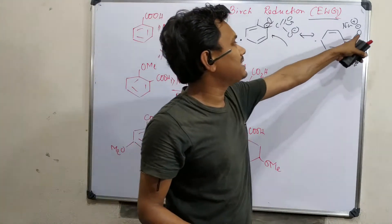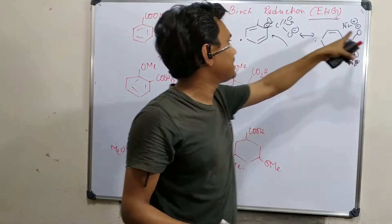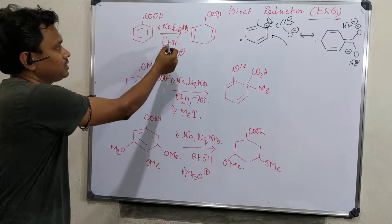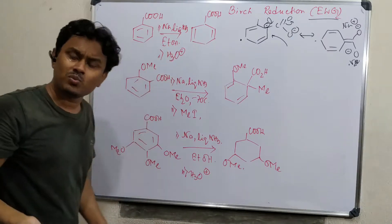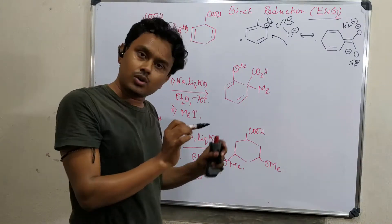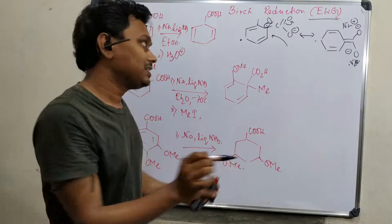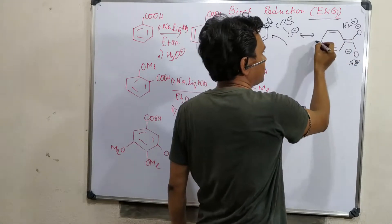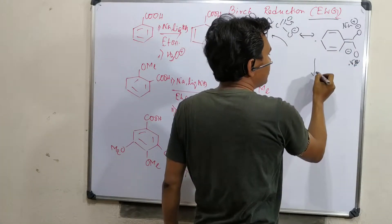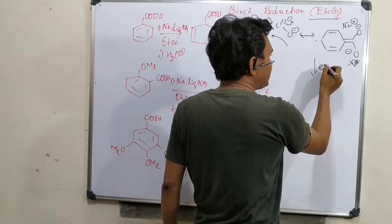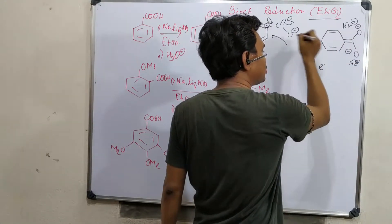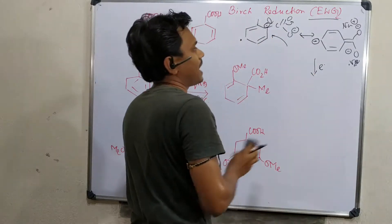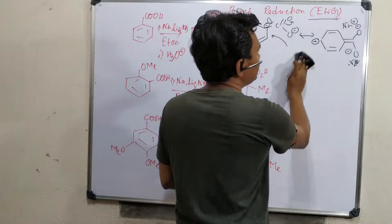Protonation will not occur easily because this is stabilized — this O minus — and if protonation happens from ethanol, that is also O minus. So no protonation will occur here. This anion is stabilized at this position. Now when the second electron is provided, it will go here and make this anion.